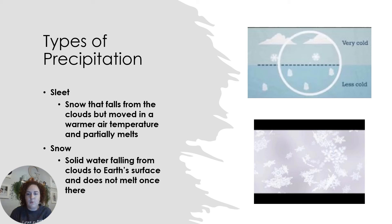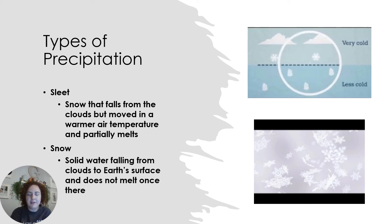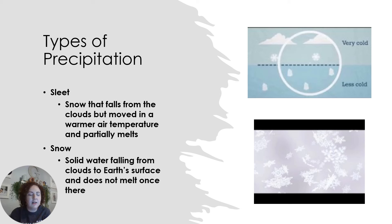Sleet is weird. Sleet is snow that falls from the clouds — so it starts out as a solid — and then moves through a warmer air mass and then partially melts. So it's the opposite of freezing rain. And then snow, obviously, is solid water falling from the clouds to Earth's surface and does not melt once it gets down here. It lands as a solid and then starts to melt depending on the temperature of the actual surface itself.